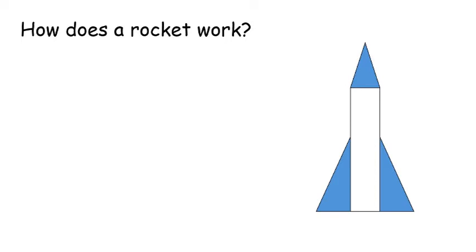First, let's talk briefly about how a rocket works. Here's a rocket. In the tail of the rocket is a motor, which in simplest terms is a container with an opening at the bottom called a nozzle. The container is filled with a flammable material known as a propellant. When the propellant burns, the combustion produces hot gas that escapes through the nozzle.